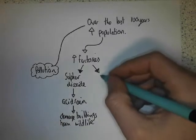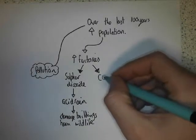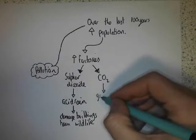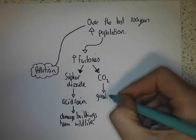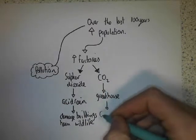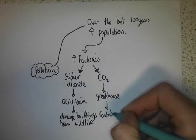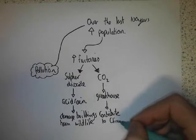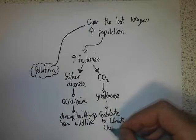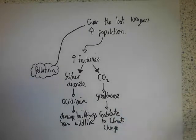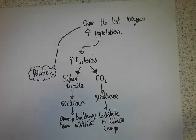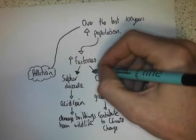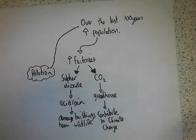What else can factories do? Well, factories give out carbon dioxide, and that is a greenhouse gas. It will contribute to climate change. The climate will change because of increased levels of carbon dioxide — not just an increase in temperature, but more hurricanes and a general change in climate.